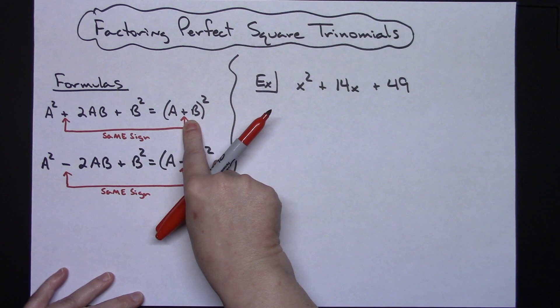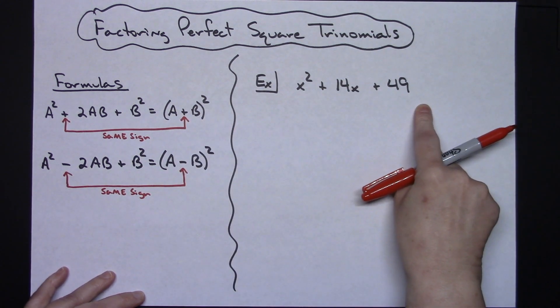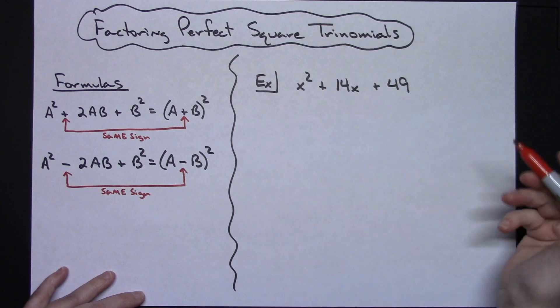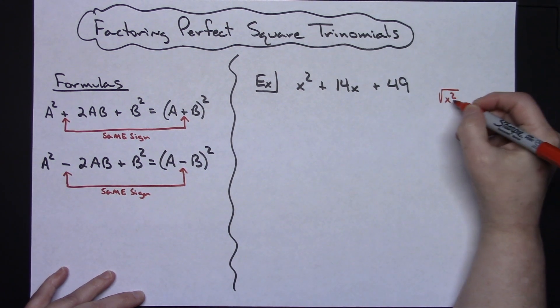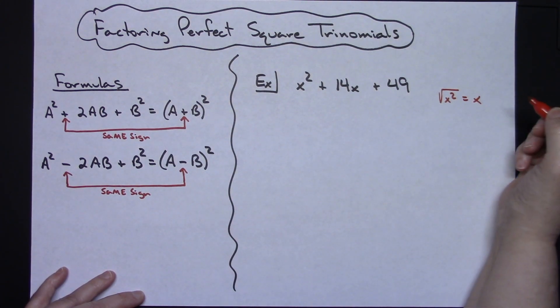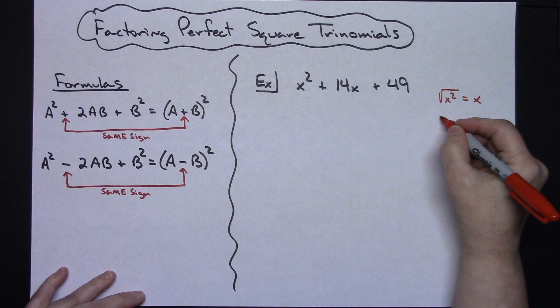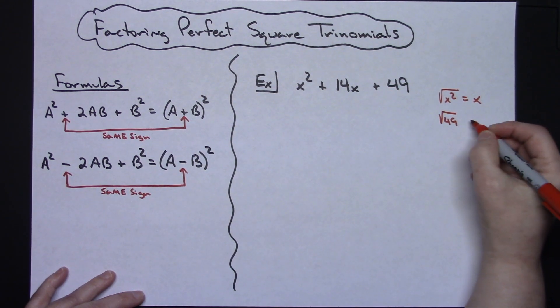So utilizing this formula here, what I have to do if I want to check to see if this is a perfect square trinomial, I need to take my first term and I need to see if I can take the square root of it. Well, square root of x² is x. So yes, I can take the square root of that. Then I have to check the last term, square root of 49. Can I take the square root of 49? Yep, I'm going to get a 7.